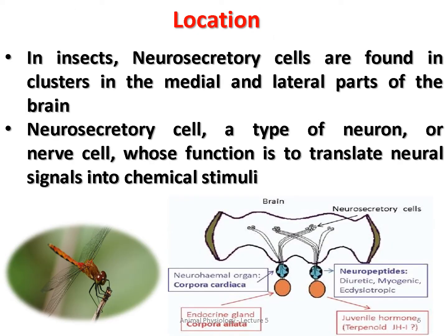Now, the location of these hormone-secreting neurons: in insects, the hormones are secreted by neurosecretory cells, and they are normally found in clusters in the median and lateral parts of the brain. These clusters of cells are called neurosecretory cells, and their function is to translate neural signals into chemical stimuli.